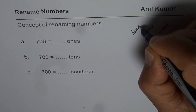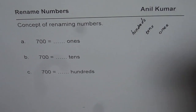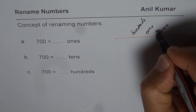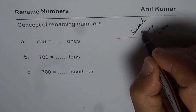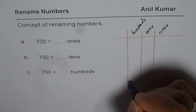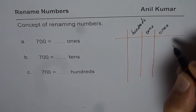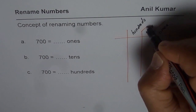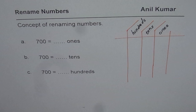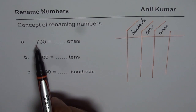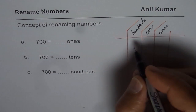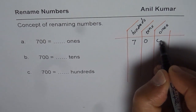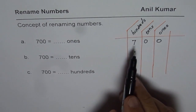Let me make a small table here to help us understand this process. So that is how numbers will normally be read — we have ones, tens, and hundreds. So if I have a number which is 700, we write 7 in the hundreds position and then 00. That is how the number 700 is normally written.